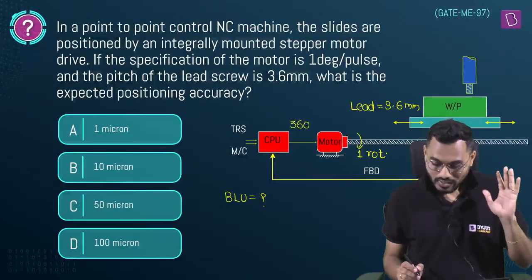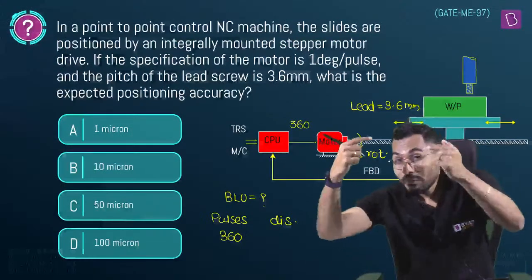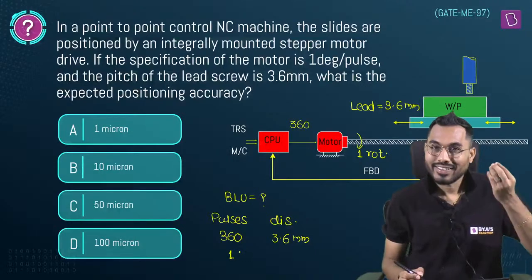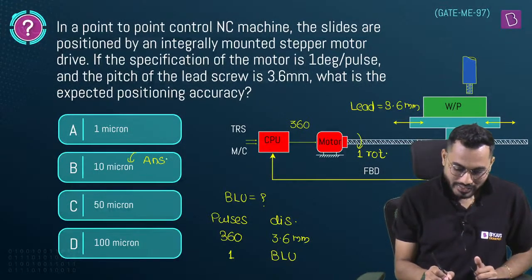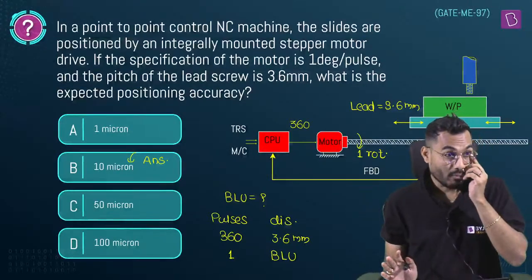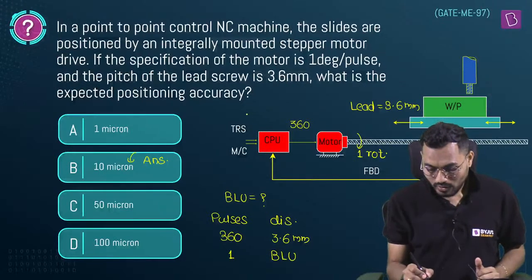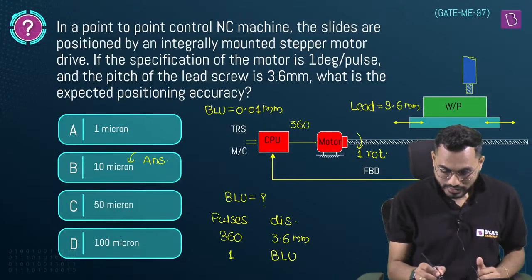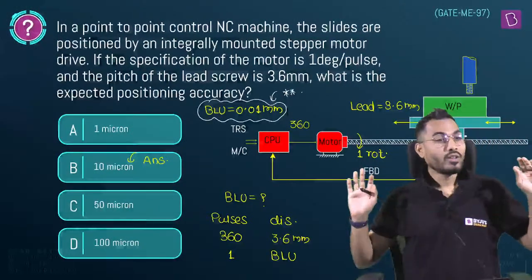For one pulse, the table travels 3.6 ÷ 360 = 0.01 mm = 10 microns. BLU = 0.01 mm = 10 microns. Option B is correct. Swathi Kumari and others calculated correctly. The answer is 10 microns.